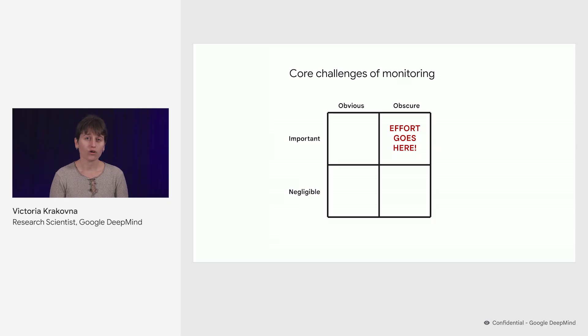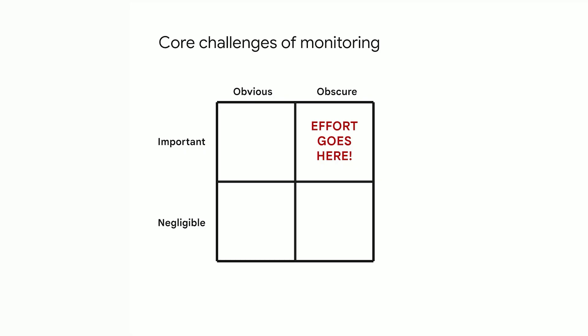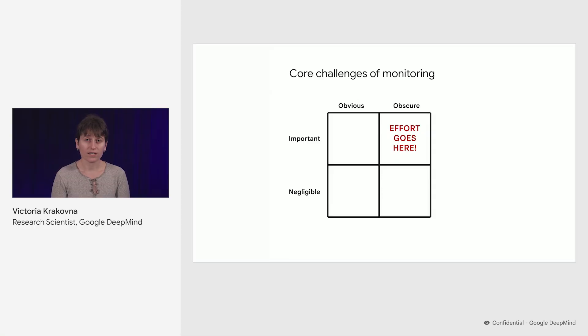So what are the core challenges of monitoring? We have a space of all possible outputs, which we can divide on two axes. One is whether the consequences of the output or action are obvious or obscure. The other is whether the consequences are important or negligible. We want to prioritize our effort in monitoring and evaluating the behavior of agents on things whose consequences are obscure — so we can't just immediately tell how bad it is — but also important. We don't need to waste effort on things that just aren't going to matter.